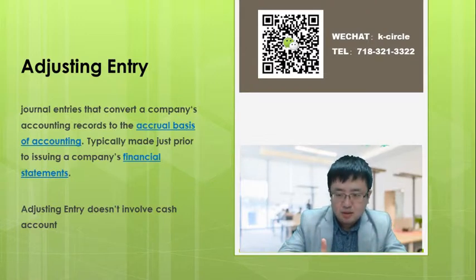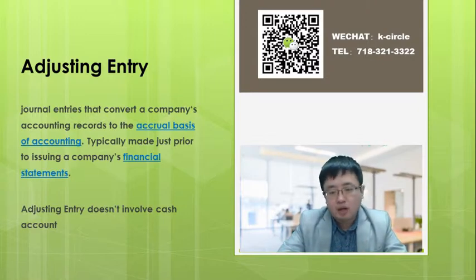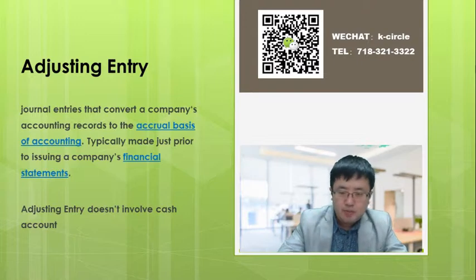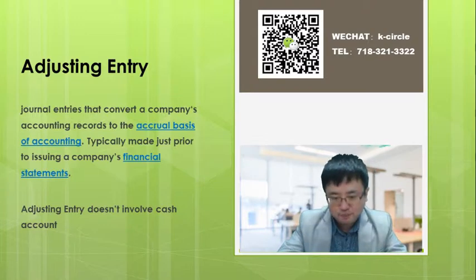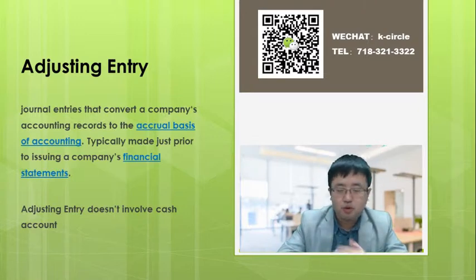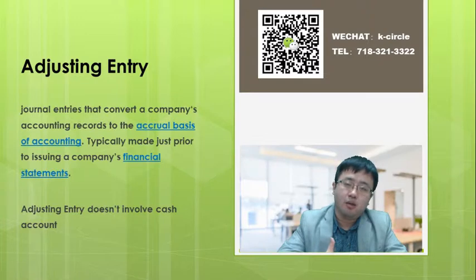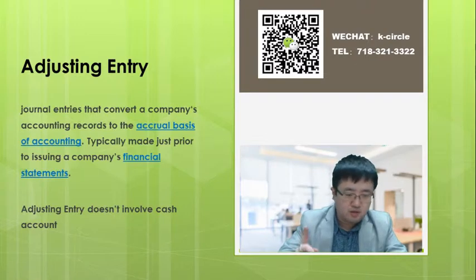Typically, the adjusting entry is made before the company's financial statement cutoff date. An important rule: never, ever involve the cash account in an adjusting entry. In a nutshell, adjusting entries do not involve the cash account — they always make revenue or expense adjustments on the P&L income statement and the corresponding accounts on the balance sheet.